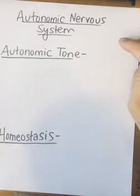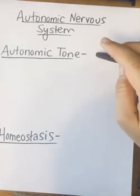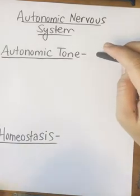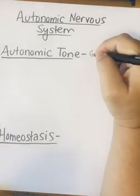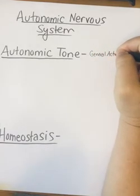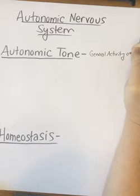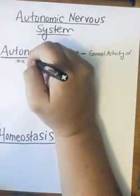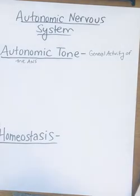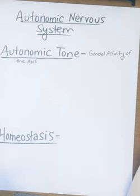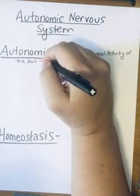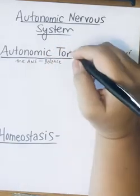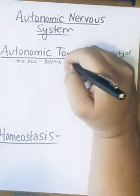We're still on the autonomic nervous system, and I want to talk about autonomic tone. Autonomic tone is basically the general activity of the ANS. When we say ANS, you have to remember that it's the sympathetic versus the parasympathetic nervous system. So when you say general activity of the autonomic nervous system, this is going to be a balance between the two.